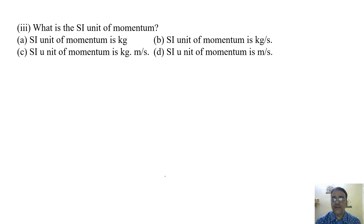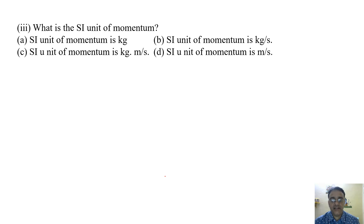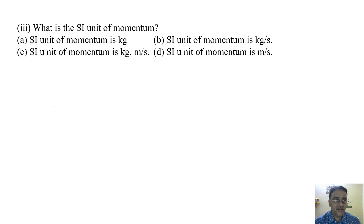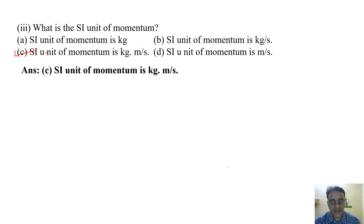Now the next question: what is the SI unit of momentum? Since momentum equals mass times velocity, the SI unit of mass is kilogram and the SI unit of velocity is meter per second. So the SI unit of momentum is kilogram meter per second.